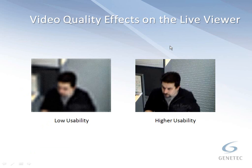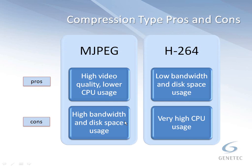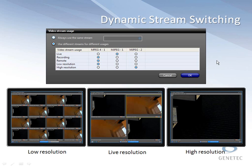Before going into detail on dynamic stream switching, it's important to understand the effects of video quality settings. These settings affect overall bandwidth, storage requirements, and usability of live and recorded video. Omnicast can take advantage of multiple streaming encoders, allowing different video quality settings for archiving, remote viewing, recording, and dynamic stream switching. Each video stream type has pros and cons: H.264 uses very little bandwidth and disk space but has high CPU usage, whereas MJPEG has lower CPU usage but high bandwidth and disk space usage.